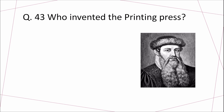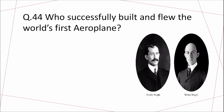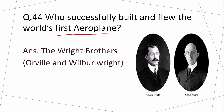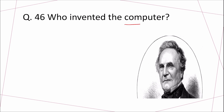Question 43: Who invented the printing press? Answer: Johannes Gutenberg. Question 44: Who successfully built and flew the world's first aeroplane? Answer: The Wright Brothers — Orville Wright and Wilbur Wright.